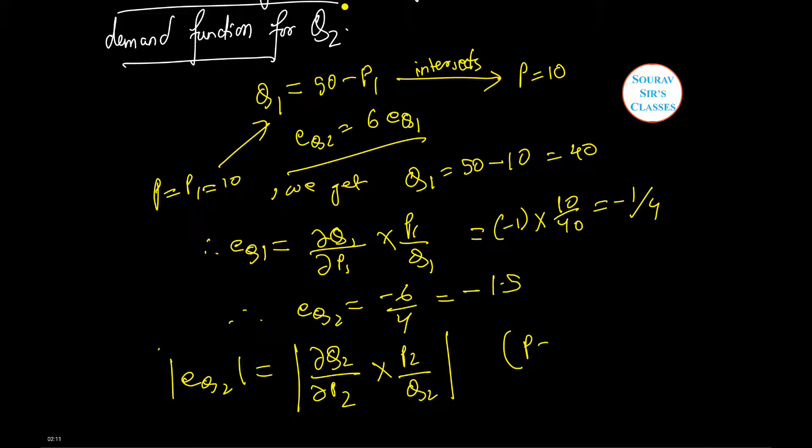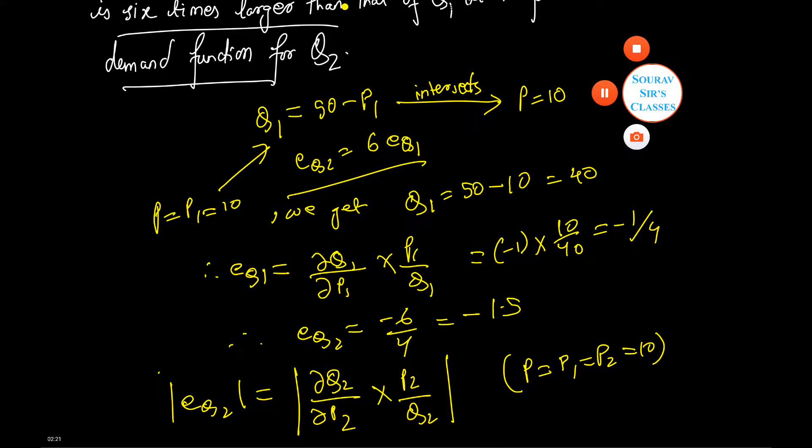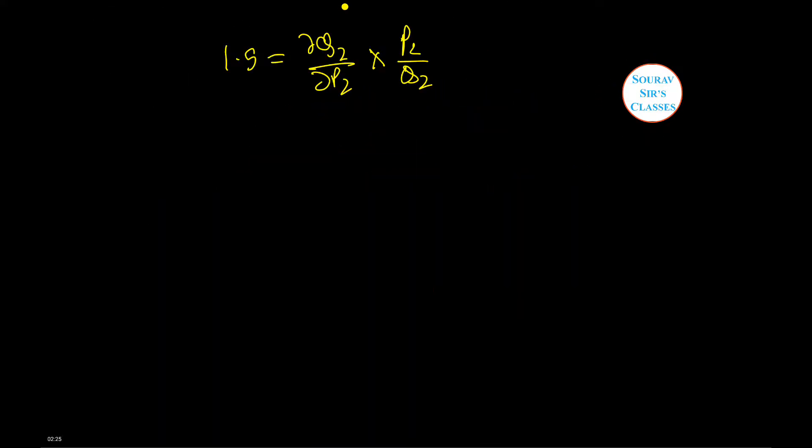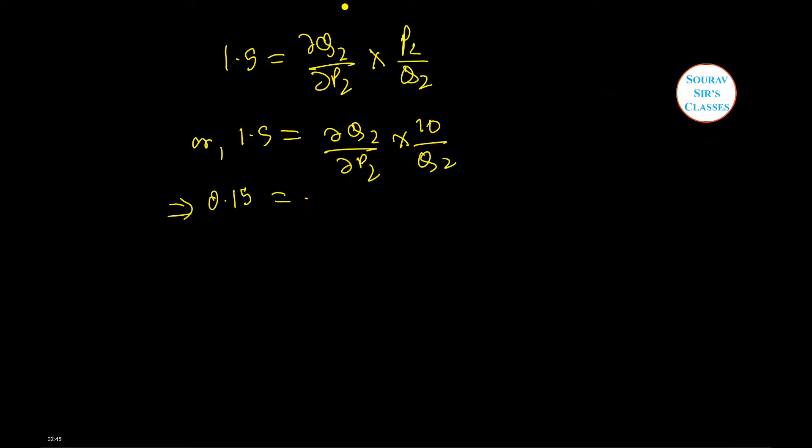This is because P equals P1 equals P2 which equals 10. Now let's put in our values: 1.5 equals dQ2 by dP2 times 10 by Q2, or 0.15 Q2 equals dQ2 by dP2.